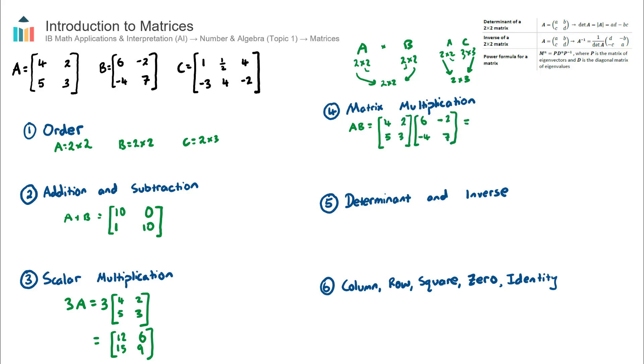This takes a little bit of practice, but let's focus on this top left cell here. The way that I find this number is I multiply across the row and then down the column. So this will become 4 by 6 plus 2 by negative 4. Let's now focus on the next number, the top right. Again, I go across the row and then down the column.